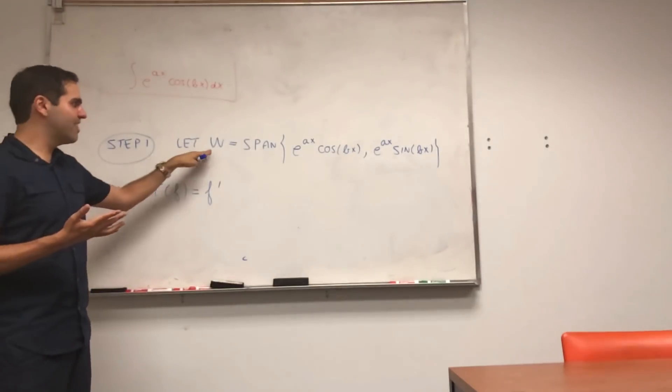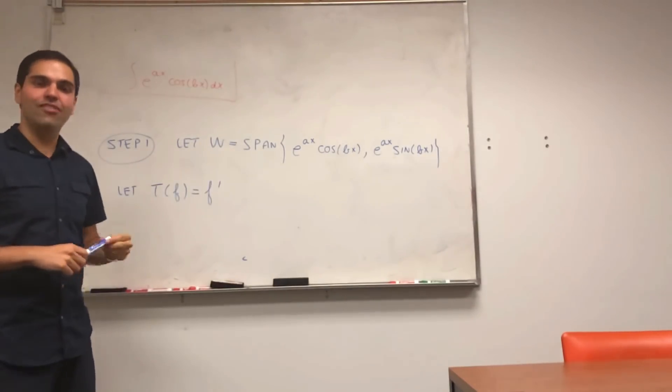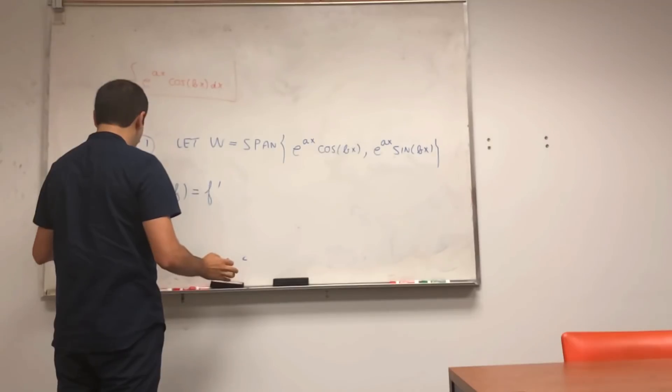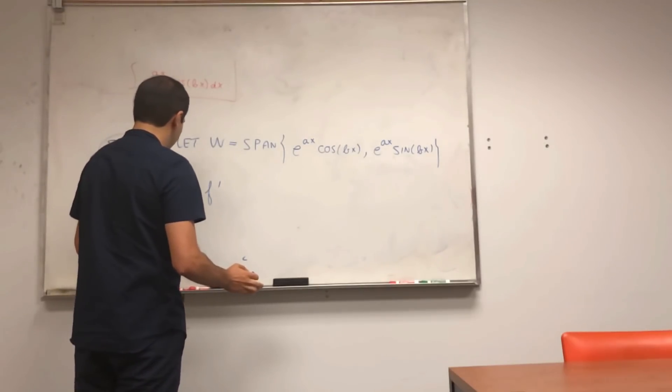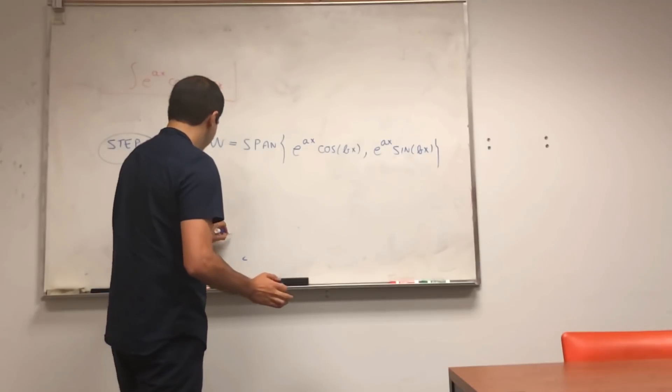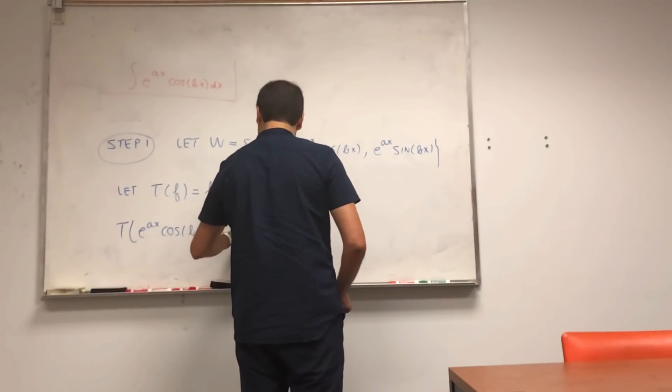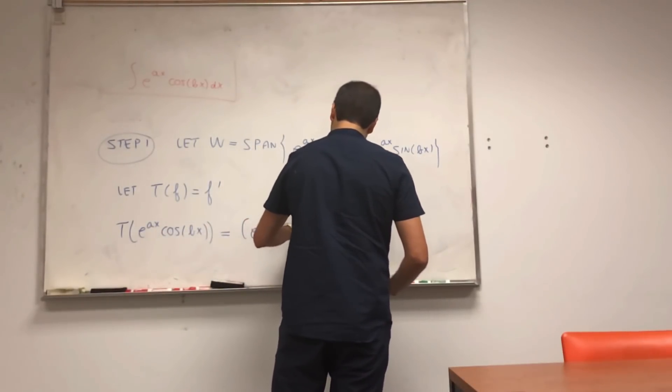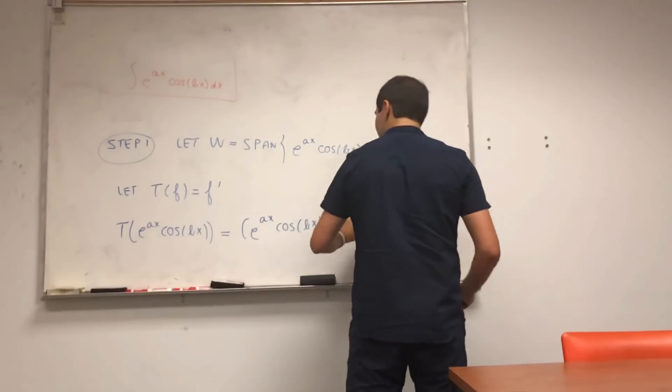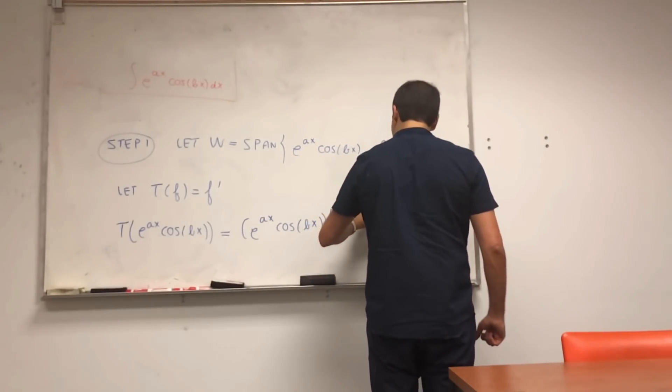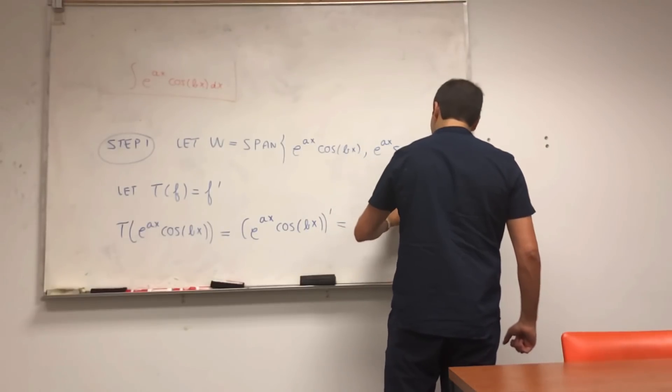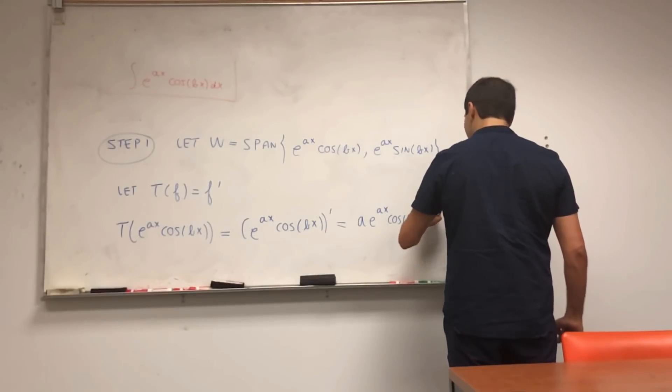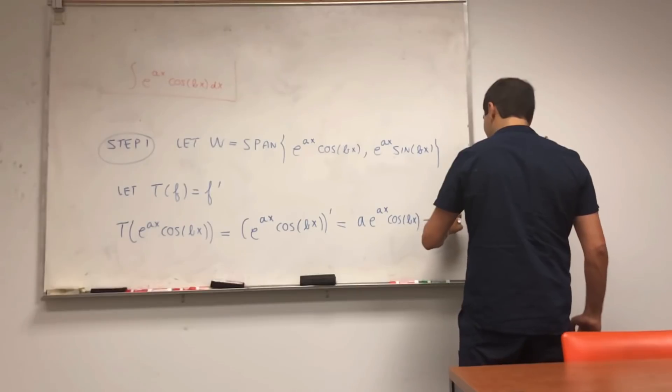But it turns out that this space w is in fact invariant under t. In particular, to show that, let's consider t of e to the ax cosine of bx. That's just the derivative of this, so e to the ax cosine of bx prime. This becomes by the product rule a e to the ax cosine of bx minus b e to the ax sine of bx.